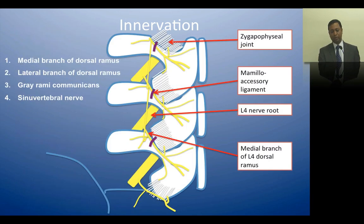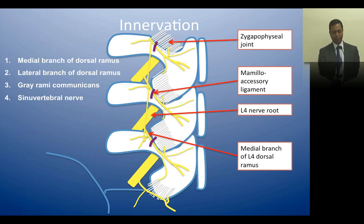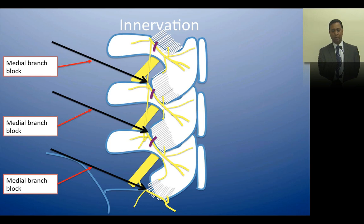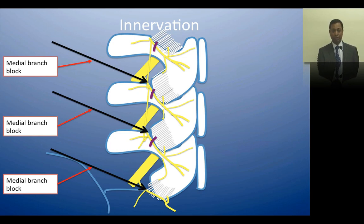There is a diagram showing the innervation of these structures. When we do a medial branch block, which we shall discuss later in management of low back pain, we aim to block the medial branch as a diagnostic test towards determining if it is the source of low back pain, and this diagram illustrates just that.